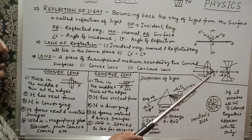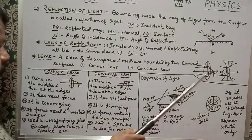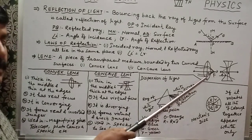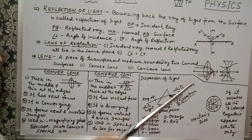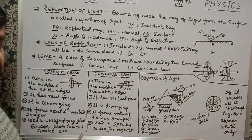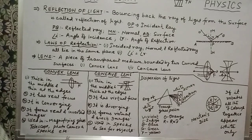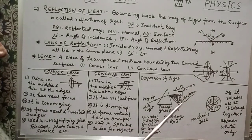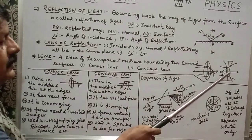The convex lens has a real focus, so it forms real images. It is used as a magnifying glass, it is used in telescopes, it is used in photographic cameras, and it is also used in spectacles to see nearby objects.